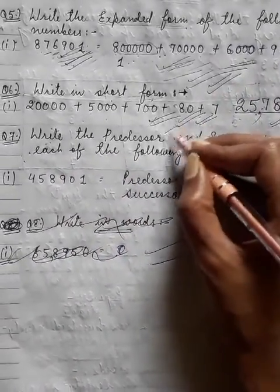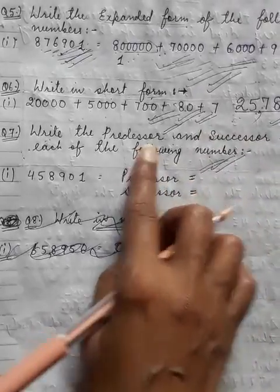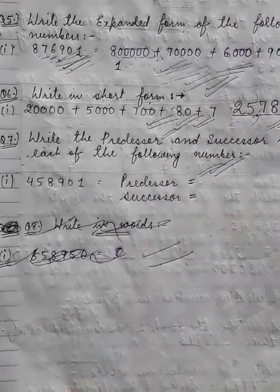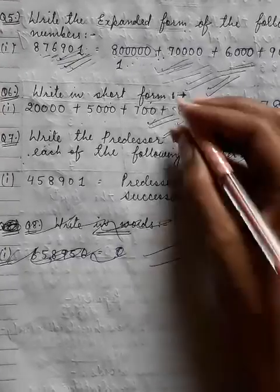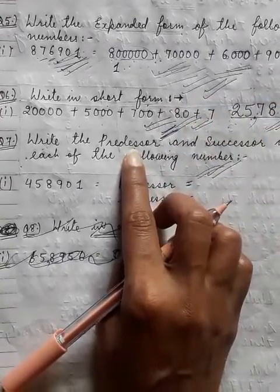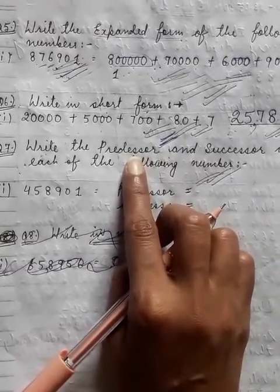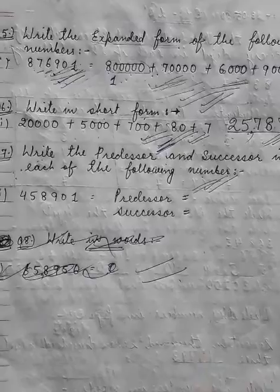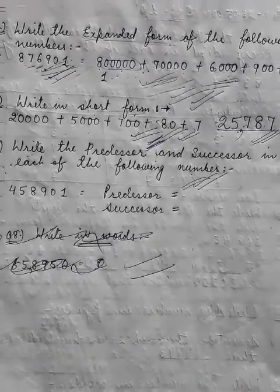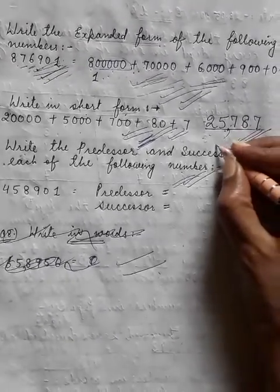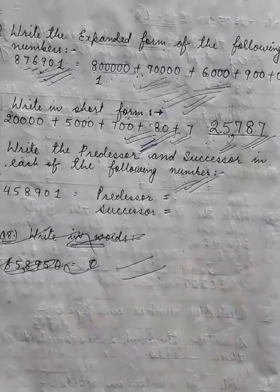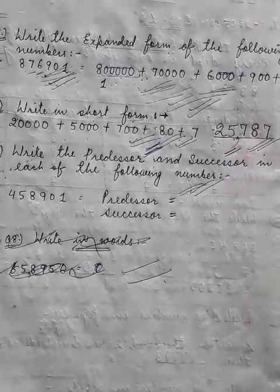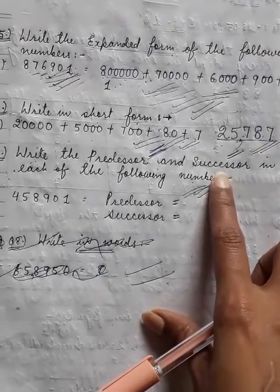I have already defined the terms predecessor and successor in my previous class. Predecessor is the number that is just before any number — predecessor wo number hota hai jo kisi bhi number ke just ek pehle aata hai. And successor is the number that just comes after any number — aur kisi bhi number ke just baad jo number aata hai, that is called successor.